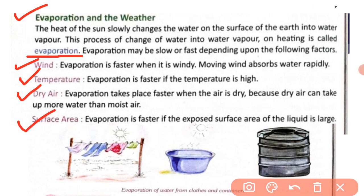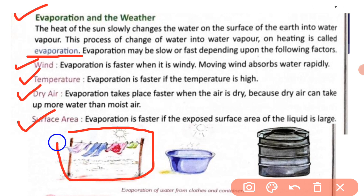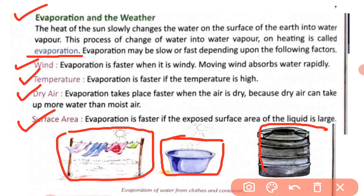Surface area affects evaporation — evaporation is faster if the exposed surface area of the liquid is large. Children, in this picture you can see: clothes have a large surface area so evaporation is fast; a water tub has less area so evaporation is a bit slower; a water tank has a smaller open surface area so evaporation there is slowest.